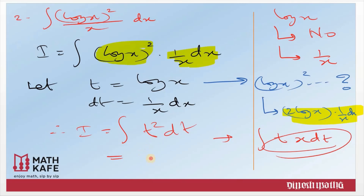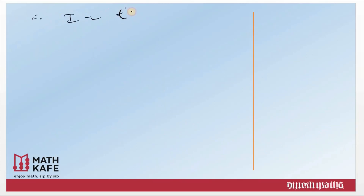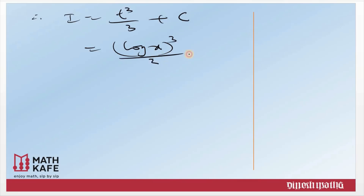Now, what is the integral of t²? Using the formula for xⁿ: t^(2+1) / (2+1), which gives t³/3 plus C. Replace t with log x. So the answer is (log x)³ / 3 plus C.